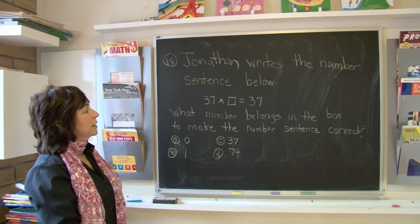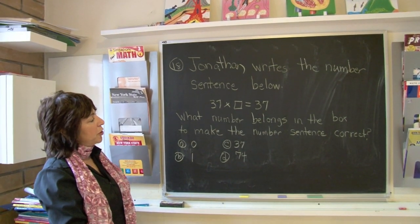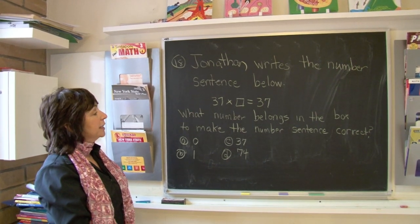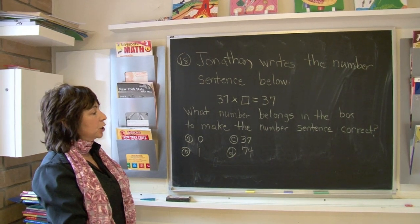Jonathan writes the number sentence below: 37 times what number equals 37? What number belongs in the box to make the number sentence correct?